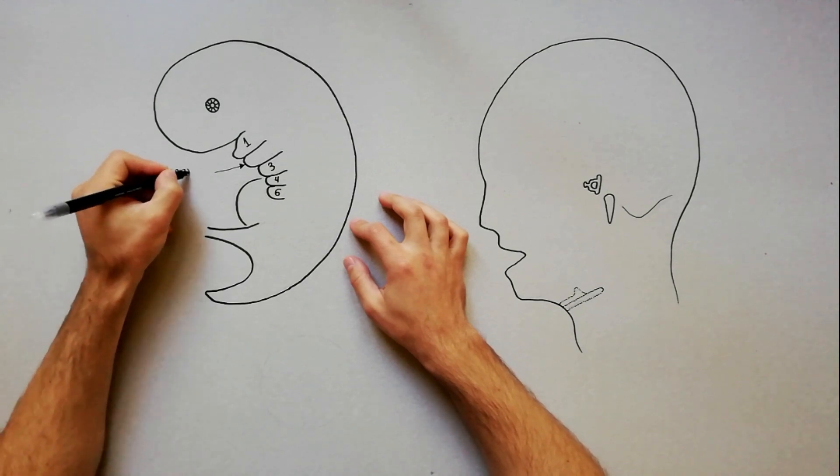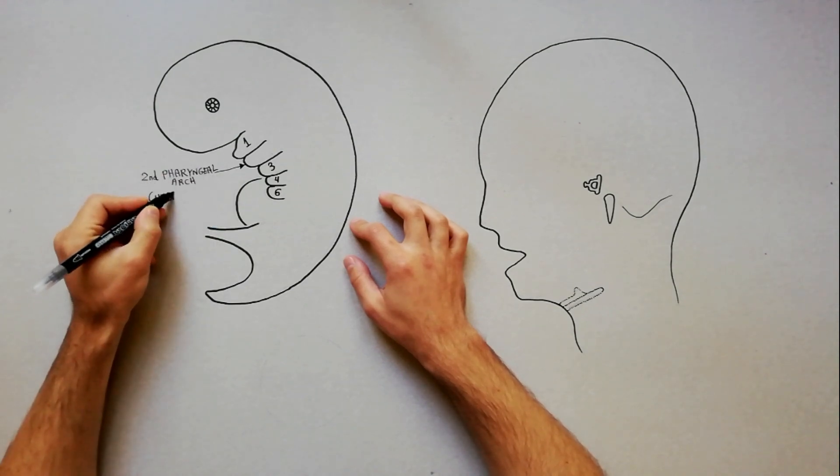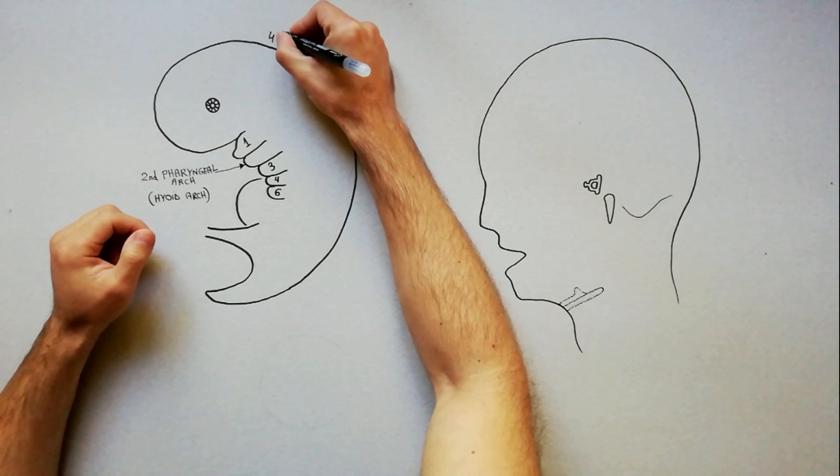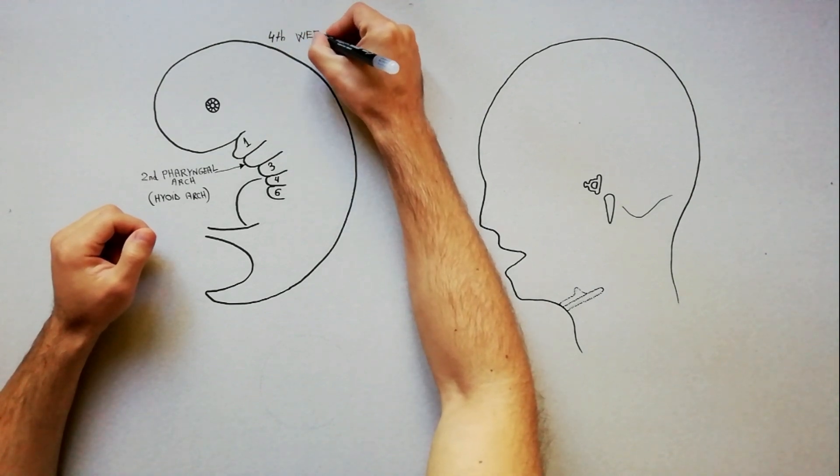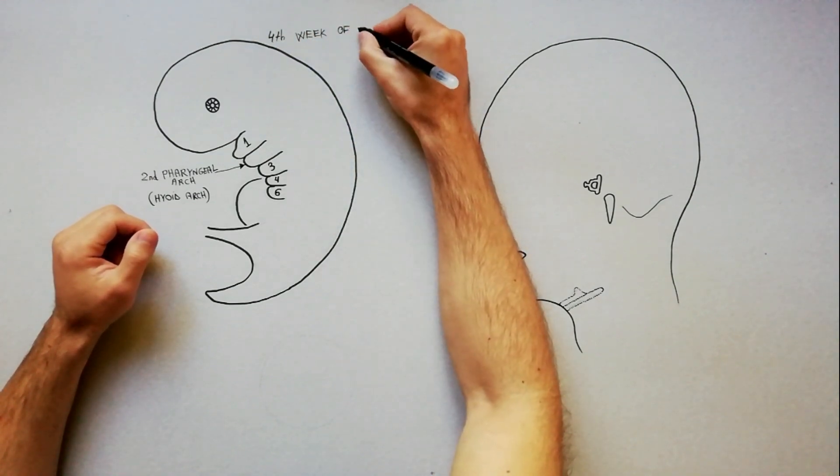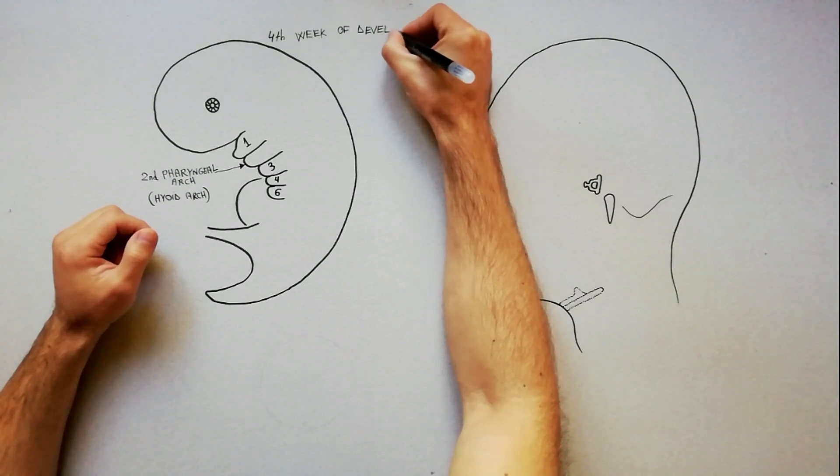The second pharyngeal arch, also called the hyoid arch, appears during the fourth week of development and is situated distally to the first pharyngeal arch and laterally to the primitive pharynx.